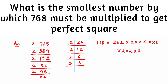Now we pair up the factors. We have four pairs of 2s, but the 3 is left single without a pair. As you may know, when finding a square root by prime factorization every factor must be in a pair. Since 3 doesn't have a pair, we need to multiply by one more 3.